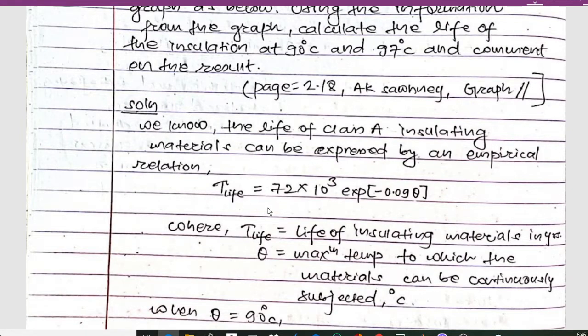The empirical formula is T_life = 72 × 10³ exp(-0.09θ), where T_life is the life of insulating materials in years and theta is the maximum temperature to which the materials can be continuously subjected in degrees Celsius.